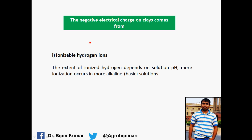Interestingly, where do these negative electrical charges on the clay come from? The first source is ionizable hydrogen ions, and these depend on the soil solution pH. In alkaline conditions, hydroxyl ions dominate, and this hydroxyl ion is the main source of ionizable hydrogen on the clay. Because of this ionizable hydrogen, there is a predominance of negative charges on the colloids.